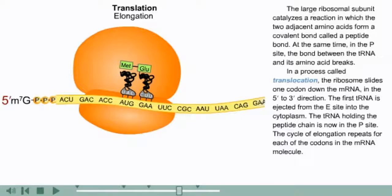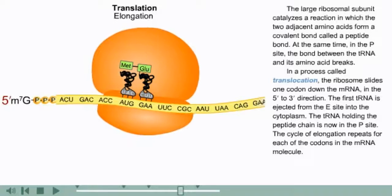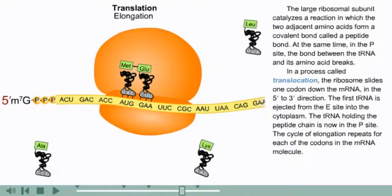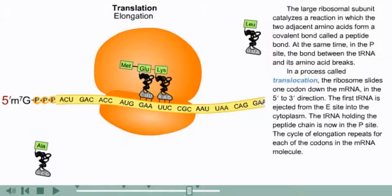In a process called translocation, the ribosome slides one codon down the mRNA in the 5' to 3' direction. The first tRNA is ejected from the E site into the cytoplasm. The tRNA holding the peptide chain is now in the P site. The cycle of elongation repeats for each of the codons in the mRNA molecule.